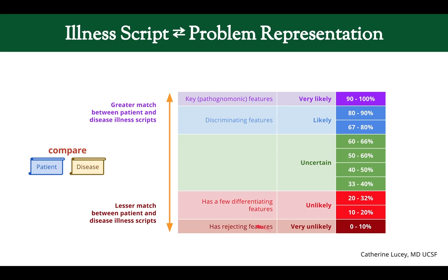One way to estimate pretest probability is by looking at the illness scripts. If there is a rejecting feature — something that rules out the disease — you put it in the very unlikely category. If there is a pathognomonic feature that defines the disease, you put it in the very likely category. Discriminating features place a case in the likely or unlikely range, and everything else falls in the uncertain area.